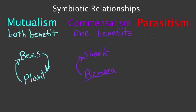The last kind of symbiotic relationship is called parasitism. Parasitism is a relationship between two different types of organisms where one benefits, but the other one is harmed.